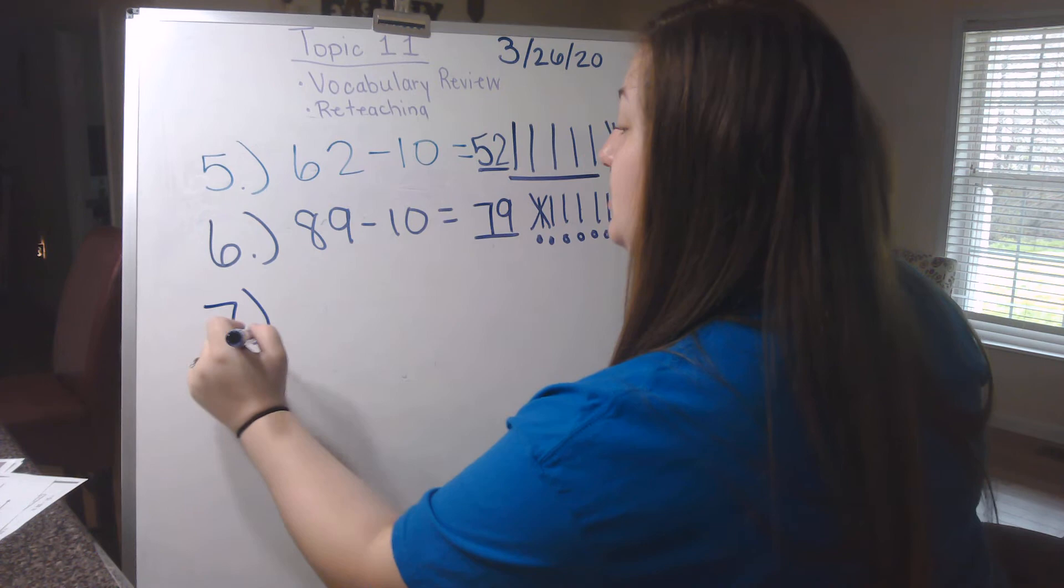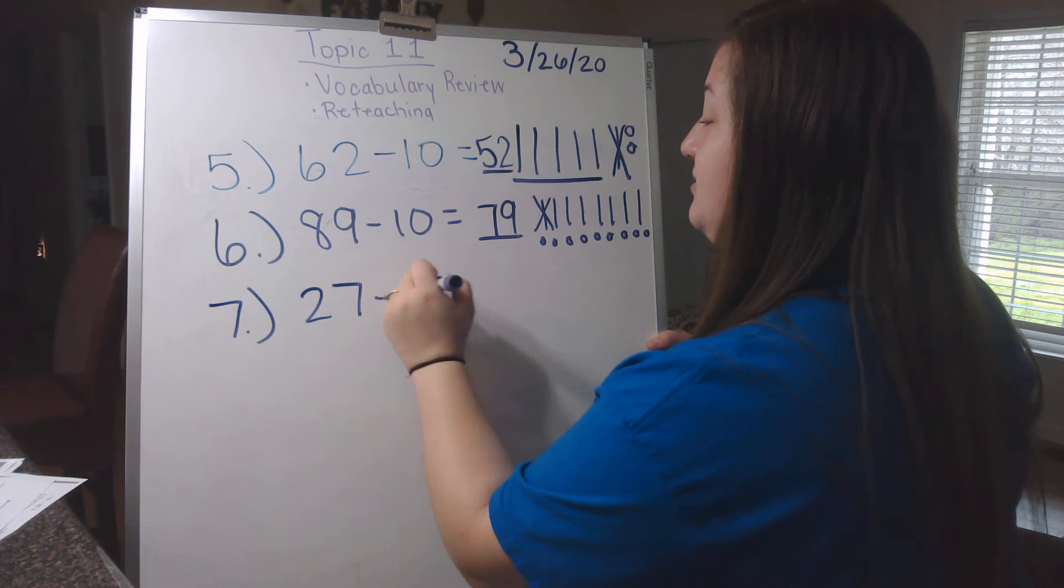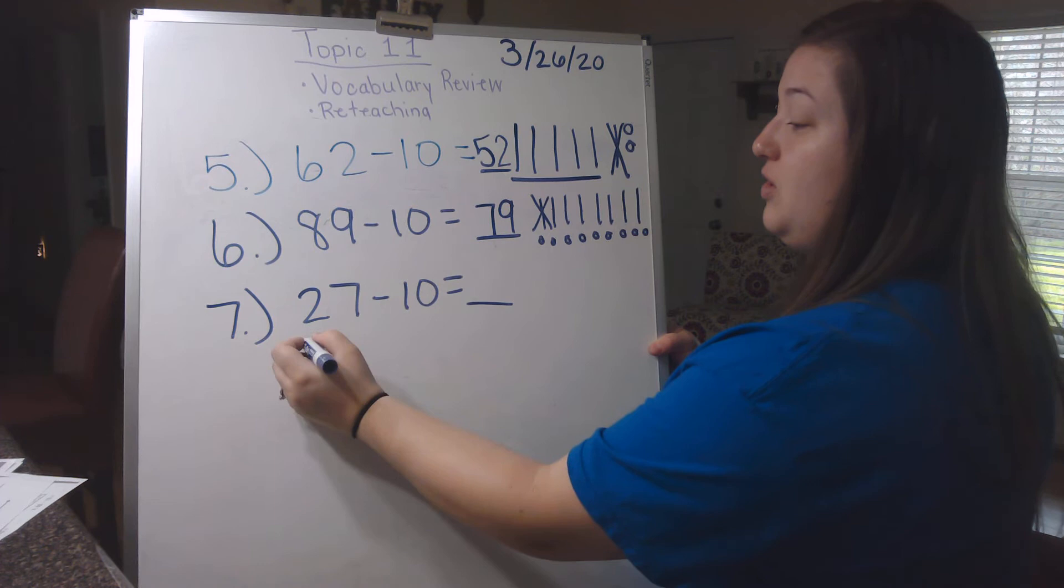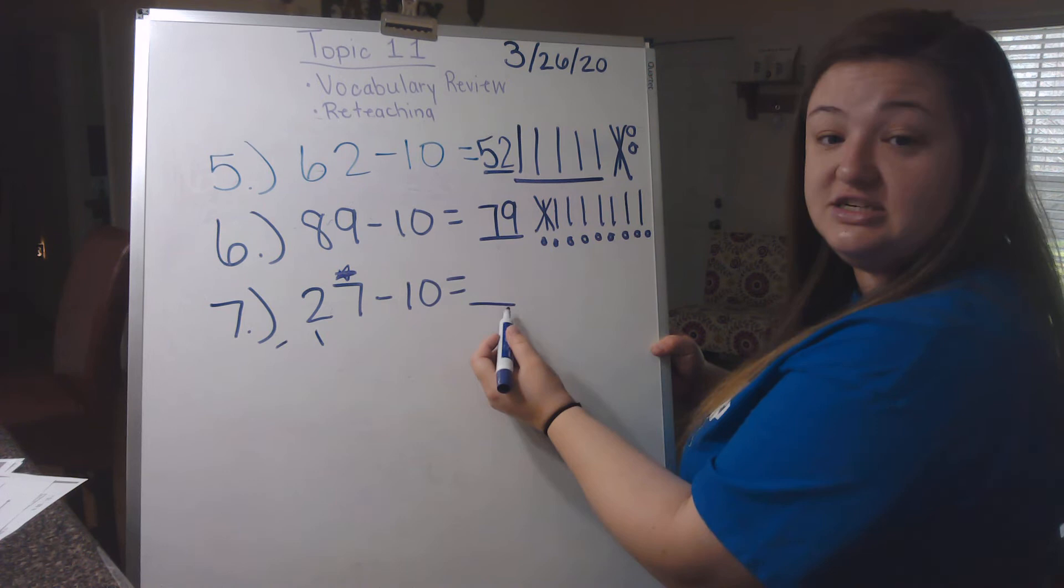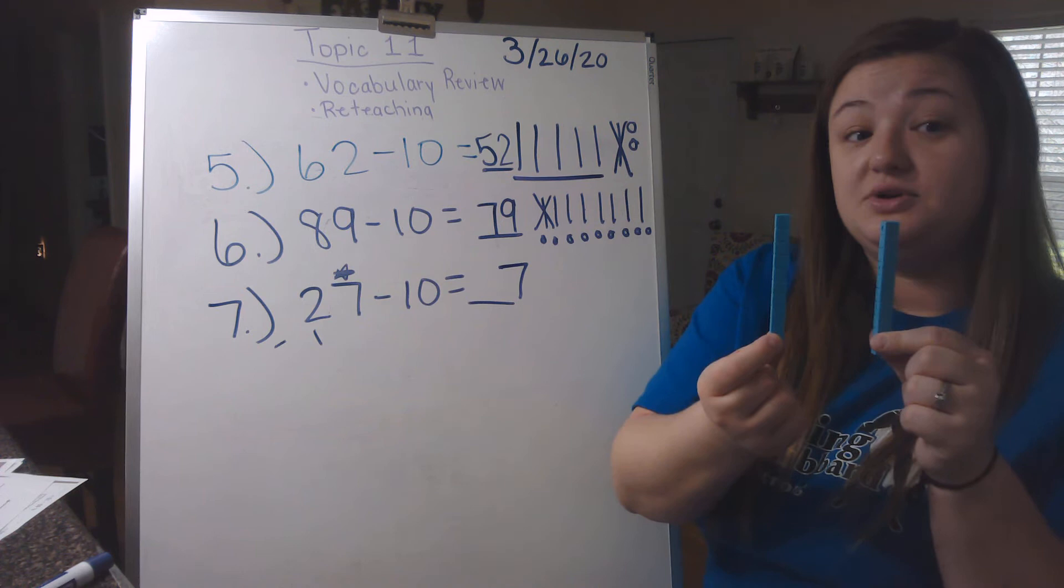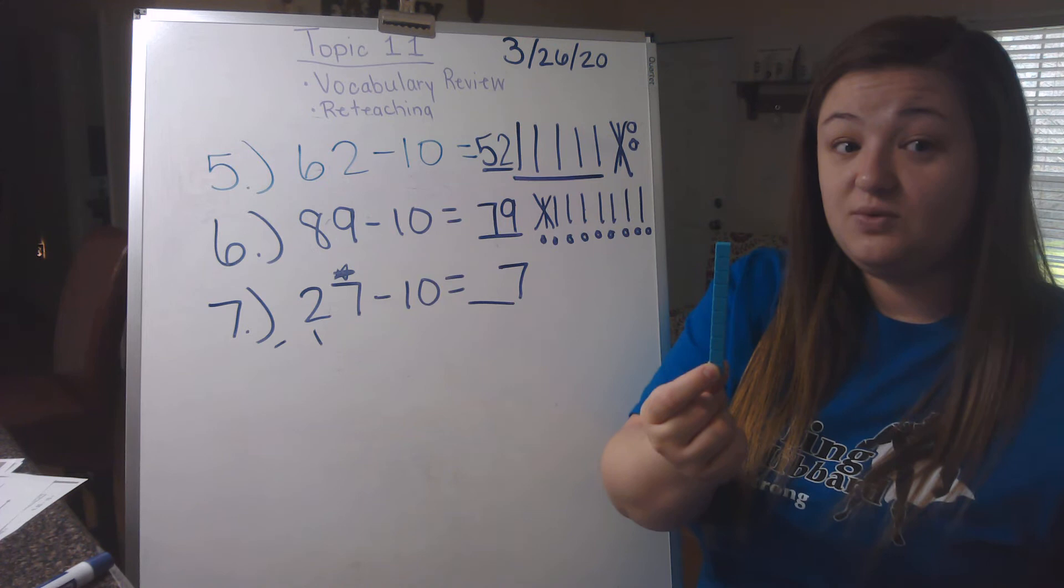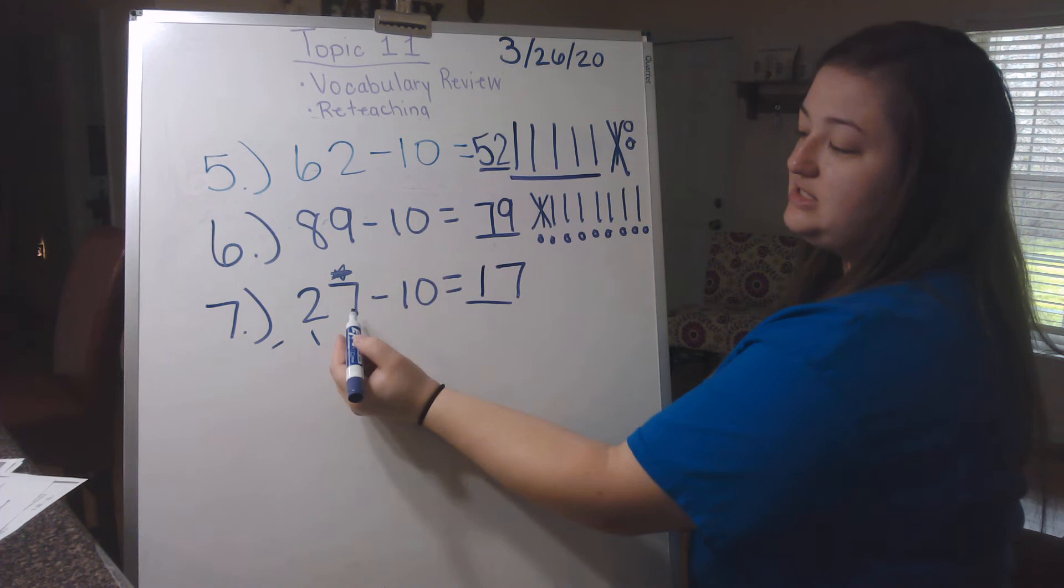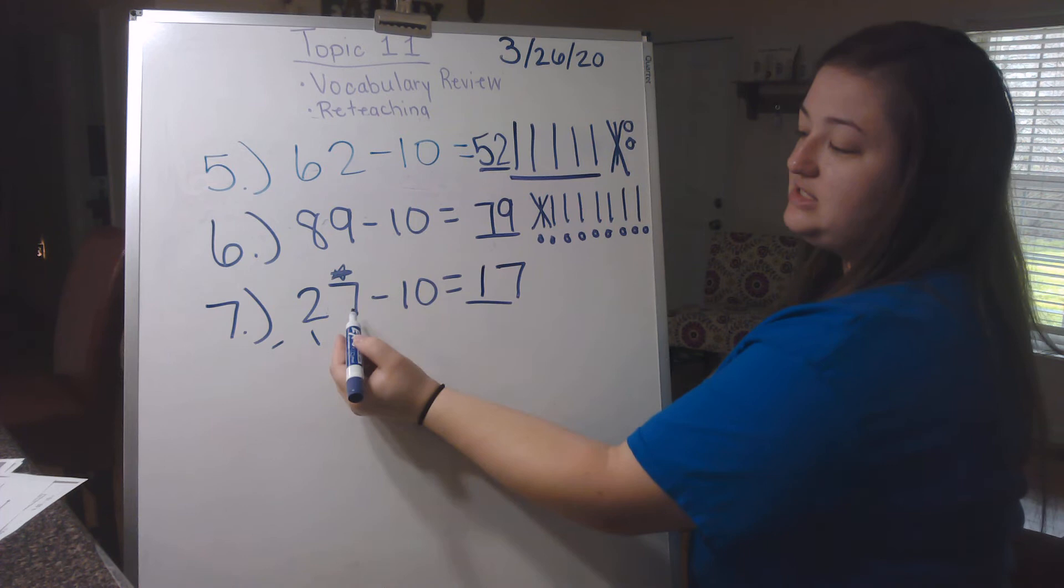And for number 7, now we're going to do this one in our head. 27 subtract 10 equals. Okay, now let's follow the rules we're going to use. Each time we're subtracting 10, my tens digit goes down one number, but my ones digit stays the same. So my ones digit over here is still going to be a 7. And my tens digit, which is a 2, is going to go down by 1. So if I have 20 right now, and I take 10 of those away, how many do I have? 10. So to put a 10, to show 10 in my tens place, all you're going to do is write a 1 and write a 7. So 27 subtract 10 is going to give you 17.